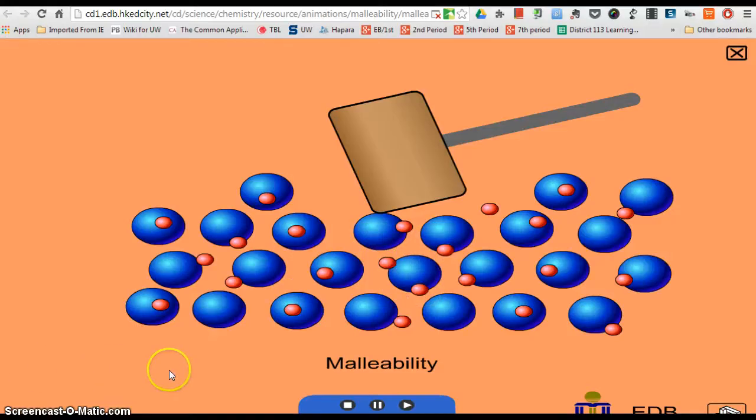So there you have it. The bonding of the metals make them conduct electricity, make them malleable, and also make them have a high melting point.